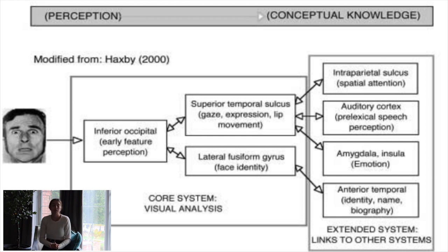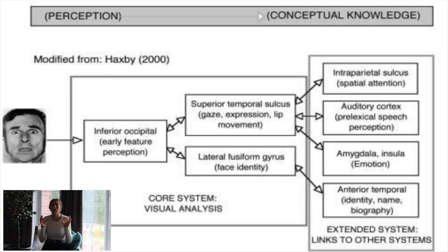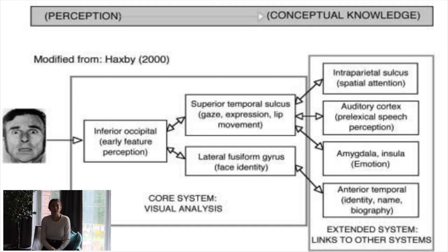That information is then relayed to anterior temporal regions that help us figure out identity — the person's name and their biography. Temporal regions often include the hippocampus, which is a memory area. There are different theories about facial recognition that we'll cover in a future video, but today we're going to focus more on recognizing emotion in another individual.